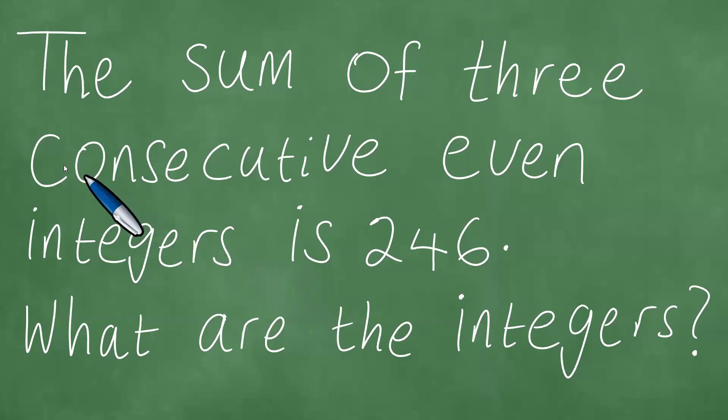We are facing this very exciting and interesting word problem in front of us, which reads as follows: the sum of three consecutive even integers is 246. What are the integers?